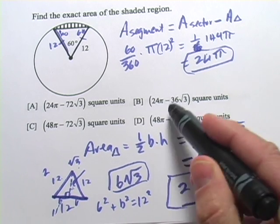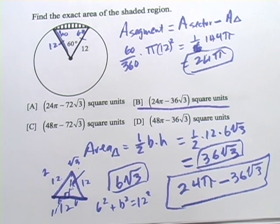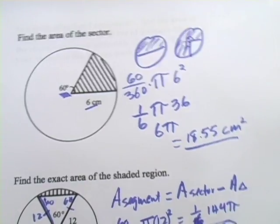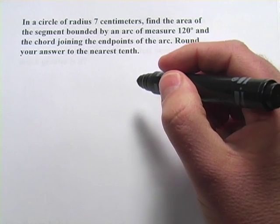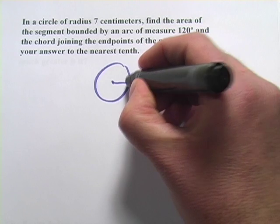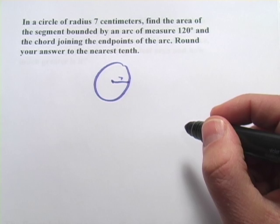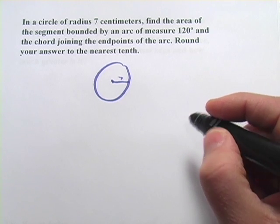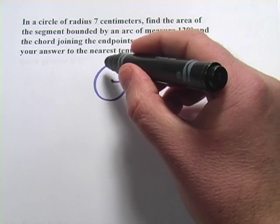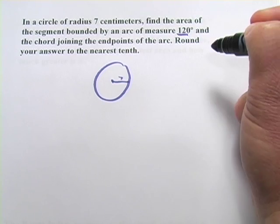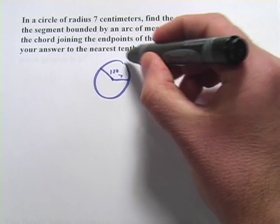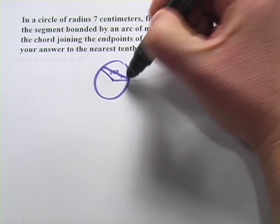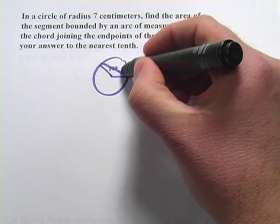We don't have to figure out the decimal on that — we've got our answer right there. A little bit of work, but it's not impossible. Let's try one more problem. We've got no picture here, so we're going to draw our own. In a circle of radius 7 centimeters, find the area of a segment bounded by an arc of measure 120 degrees and the chord joining the endpoints of the arc. We've got a 120-degree arc, so a central angle of 120 degrees. The segment is the area formed when you connect the endpoints of those two radii.